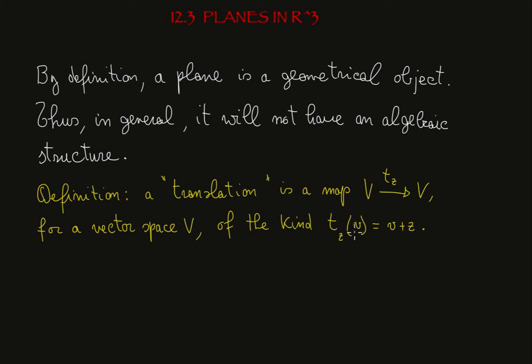It means that it takes a generic vector v inside V and sends it to the sum of v with a fixed vector z, which completely describes the translation Tz.